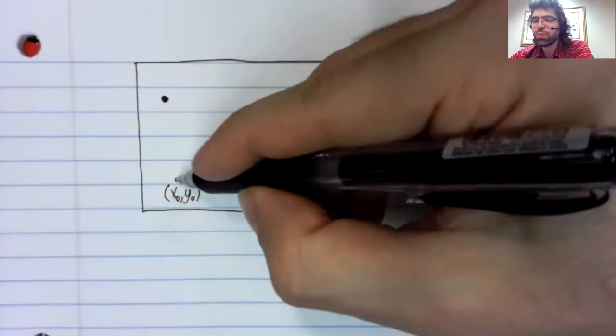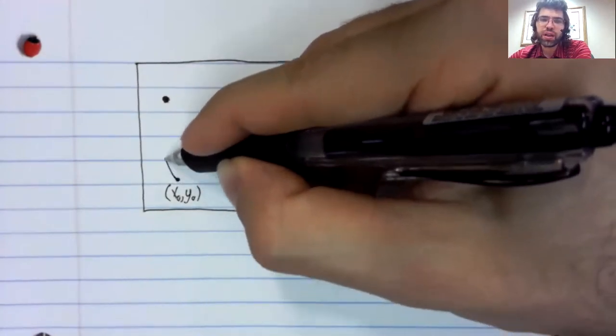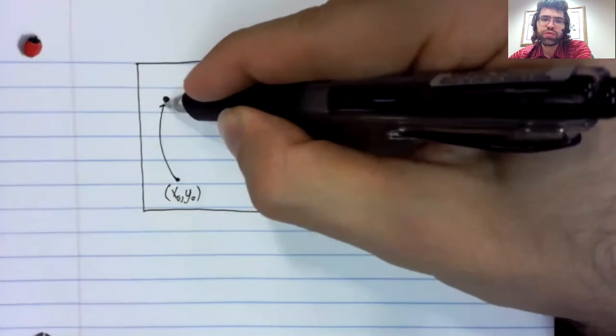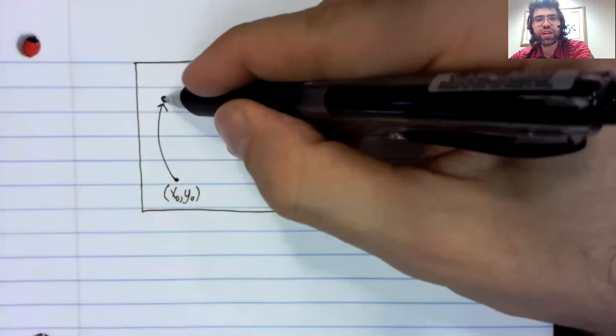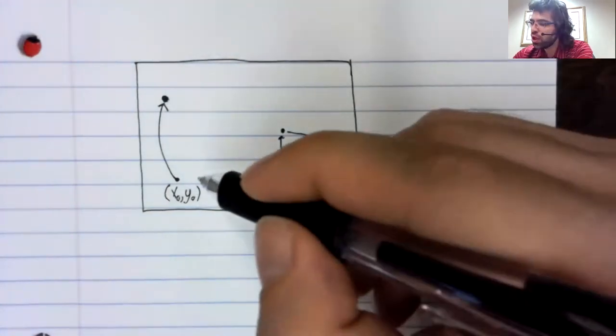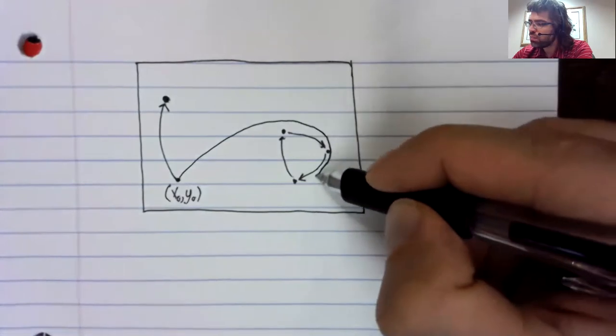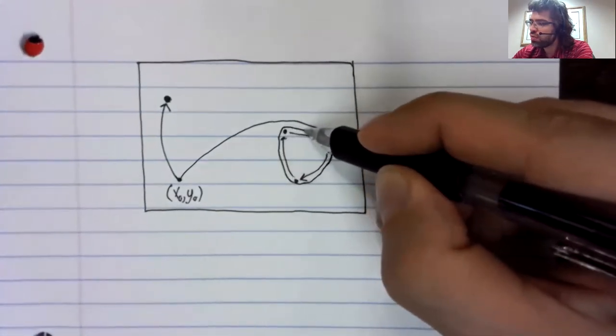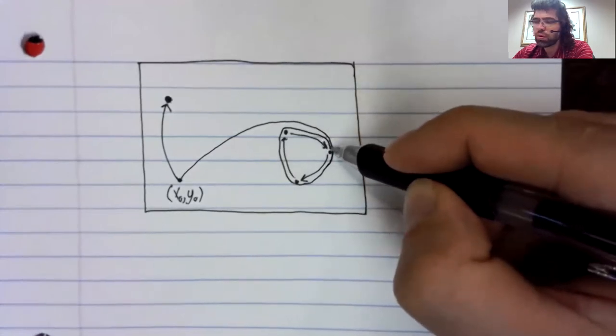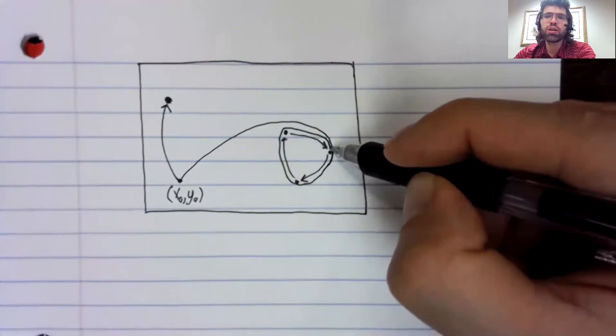Then only one of two things can happen. Either we approach this fixed point, or we asymptotically approach this orbit. Those are the only possibilities.